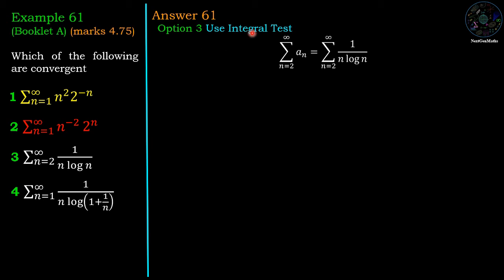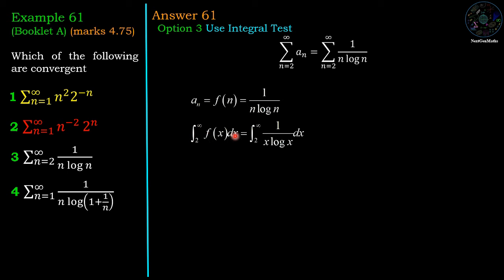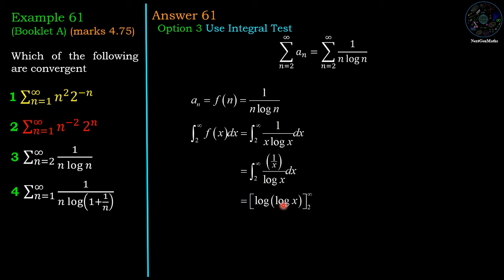For the third option we use the integral test, where a_n equals f(n) equals 1 upon n log n. We evaluate the integral from 2 to infinity of 1 upon x log x dx. We can rewrite this as (1 upon x) divided by log x — the numerator is the derivative of the denominator, so this is f dash upon f. Using the integration result we get log(log x) evaluated from 2 to infinity. Putting x equal to infinity gives infinity, and log 2 gives a finite value, so the result is infinity minus a finite value, which is infinity. Therefore the integral is divergent, and hence the series sigma n equal to 2 to infinity 1 upon n log n is also divergent.